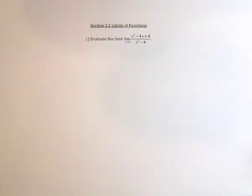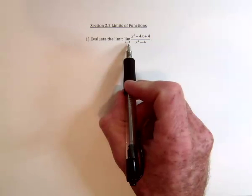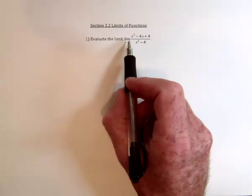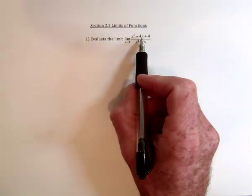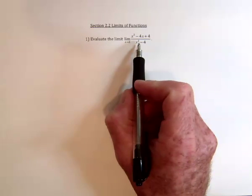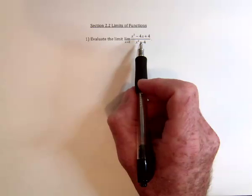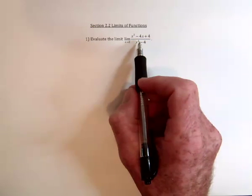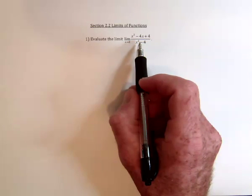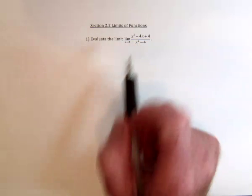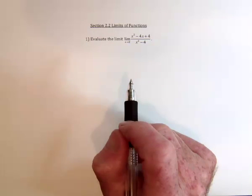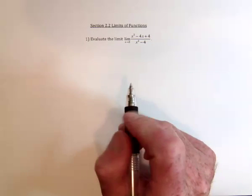When trying to evaluate limits, especially when this is a number, the first thing to do is substitute that number in for x and see if you get a numerical result. If you do, you're done. If you get something like division by 0 or infinities, then you need to try something else.